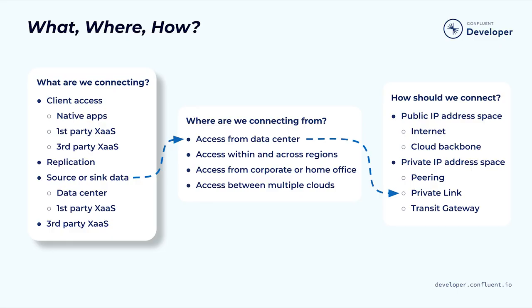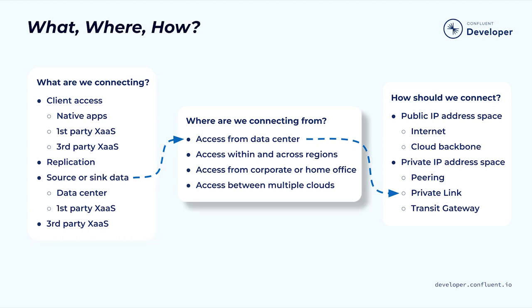As you make decisions around your network architecture, here are some things you should be thinking about. First, what are we connecting? What types of clients, applications, and services are going to be interacting with Confluent Cloud? Do we have to worry about multi-cloud or multi-region architectures? How are we going to handle replication? What types of data infrastructure are we going to be integrating with Confluent? Do we have self-hosted data sources or data sinks? How are we going to handle third-party data, SaaS or PaaS providers? Next, where are we connecting from? Are our clients running on-premise or in the cloud? Do we have users that need to access Confluent data from corporate networks or even from their home offices? Do we need to access data from across different clouds?